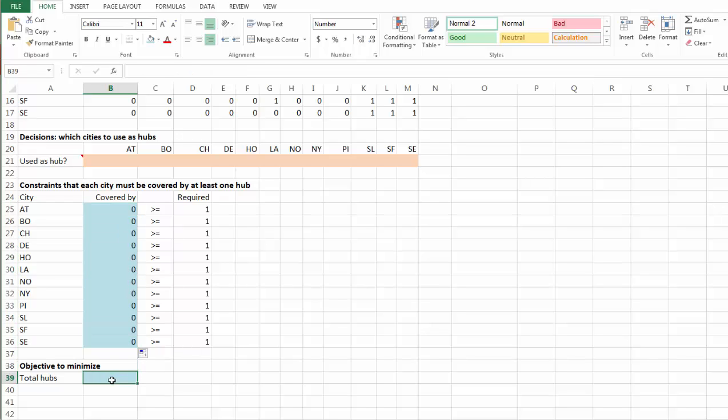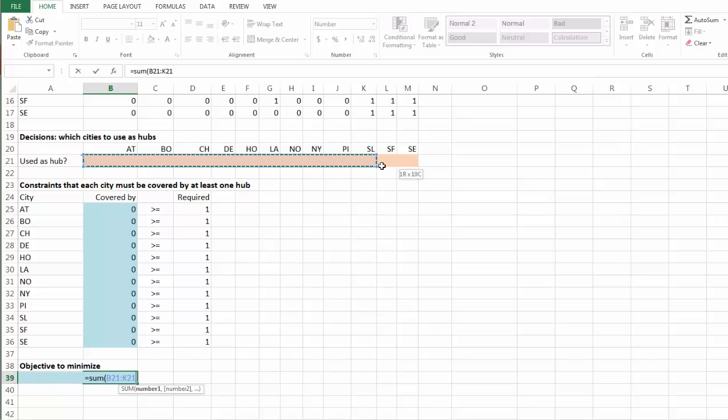Our objective function is pretty easy. It's nothing but the sum of all those 12 binary decision variables. And that gives us the total number of hubs which we would like to minimize.